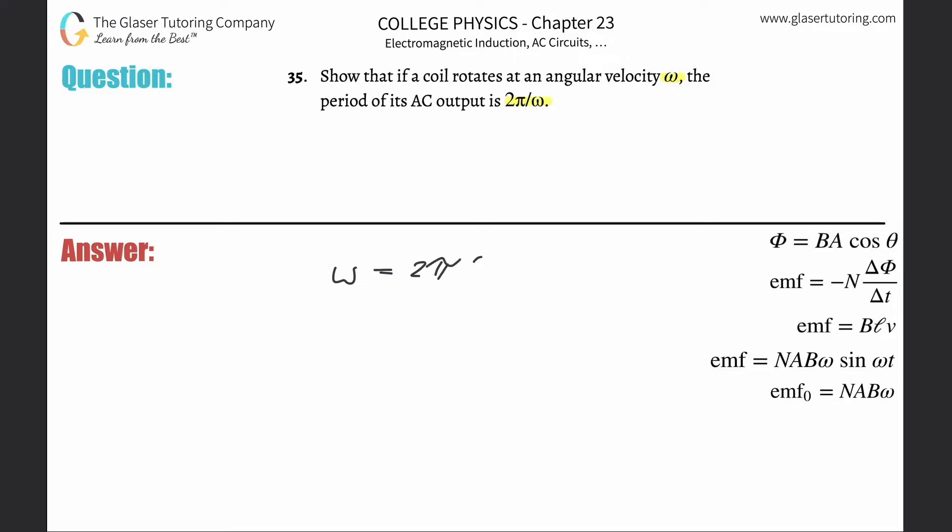going to be a function of 2π multiplied by the frequency. But remember that the frequency is just the inverse of the period. So therefore you can cross multiply this if you want, and you can realize that the period is the inverse of the frequency.